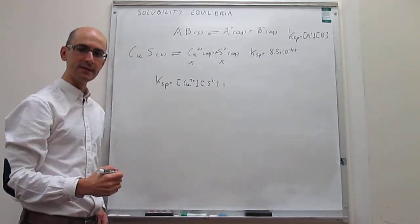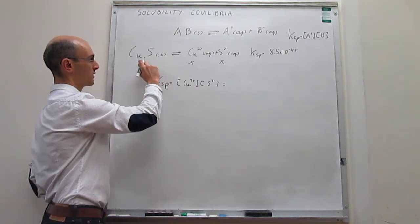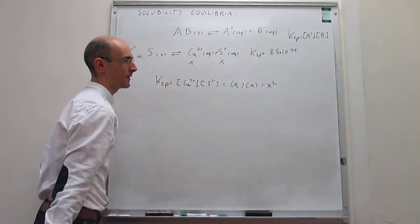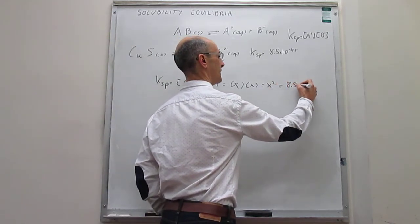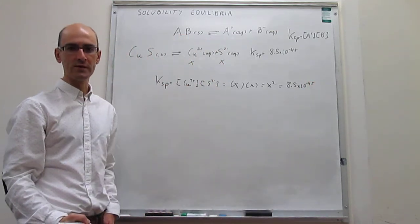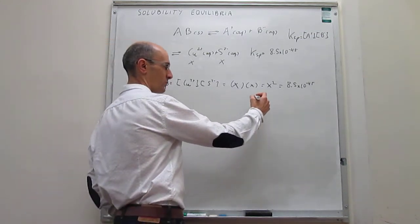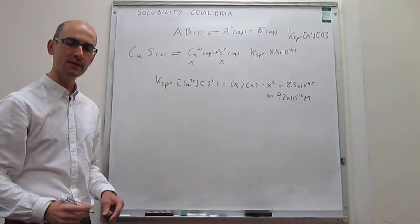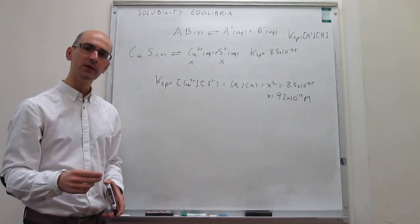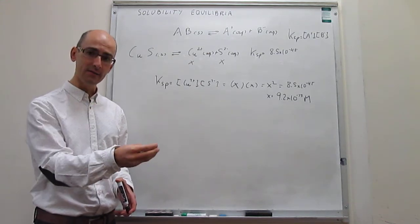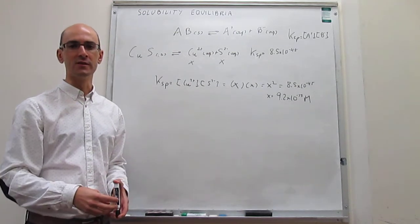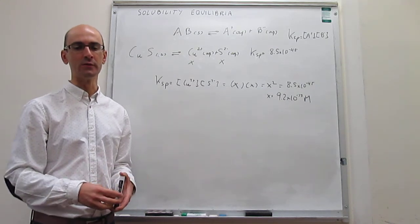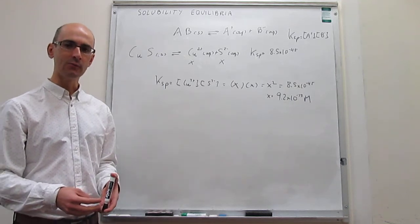When we code this in terms of solubility x, since the solubility equals the concentration of each ion in solution, this becomes x times x, or x². So x² = 8.5×10⁻⁴⁵, which allows us to calculate the solubility quantitatively. Taking the square root, we find the solubility equals 9.2×10⁻²³ molar. The strategy is always to find the concentration of ions that have emerged from the salt, since that is related to solubility. This is the simplest case, where stoichiometric coefficients are all one.